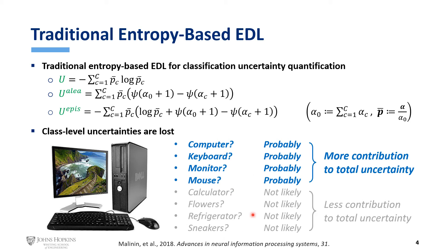It cannot tell how uncertain each class is. For example, in this image which contains a monitor, a keyboard, and a mouse, the model is probably more uncertain about these classes than other irrelevant ones like calculator and flowers. So these contribute more to the total uncertainty, while other classes contribute less. The traditional entropy-based approach failed to capture this class-level information.